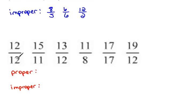Starting with our first one, we have 12 over 12. The numerator is the same as the denominator, so that is improper.